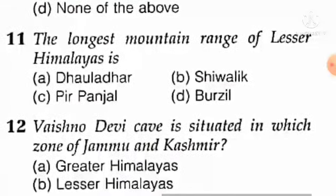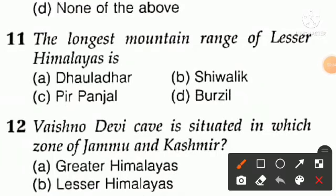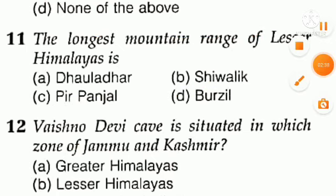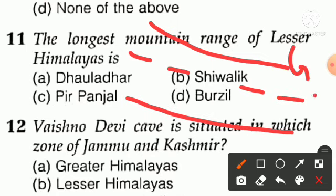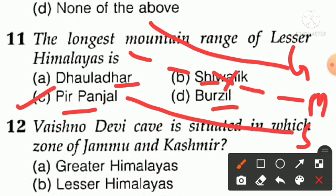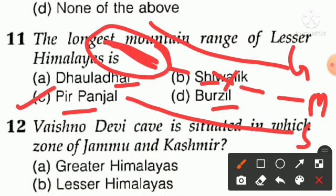Question number eleven: the longest mountain range of the lesser Himalayas. There are three parallel ranges — Greater Himalaya, Lesser Himalaya, and Shivaliks. Option A is Dhauladhar, option B is Shivalik, option C is Pir Panjal, option D is a fourth option. Option C is right — Pir Panjal is the longest range of the lesser Himalayas. Shivalik is not a range of the lesser Himalayas; it is the Shivalik range.